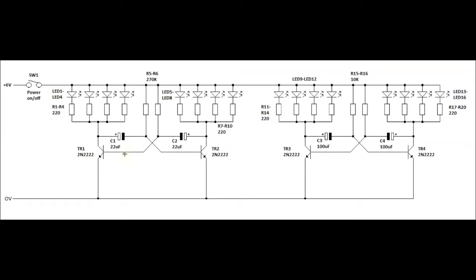Now the way the astable multi-vibrators work is that each transistor continuously turns each other on and off. That is, there is no stable state—it's astable. The timing of the astable is determined by the two resistors and two capacitors in each part.